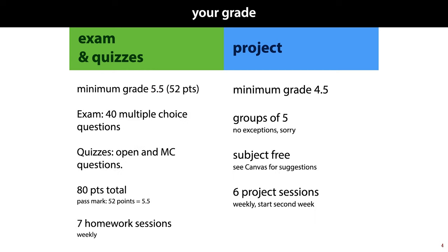Here are the rules in more detail. For the exam and the quizzes, you score points: 10 each for the quizzes and 40 for the exam, for a maximum total of 80 possible points. You need to score at least 52 points to pass, which corresponds to a 5.5 for the examination. To support the exam and the quizzes, there are homework exercises.